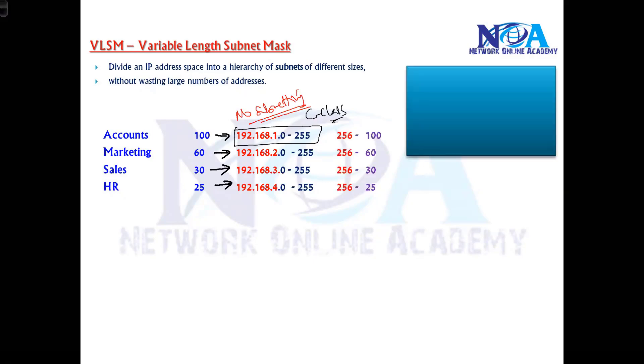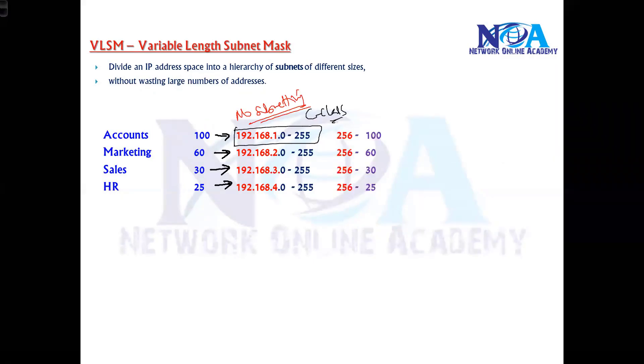Each network in C class supports 256 addresses by default. Out of 256, I'm just using 100, so around 150+ addresses are not being used. Likewise here, around 200 addresses are wasted. To avoid this, we did something called FLSM.